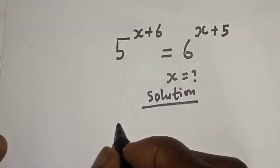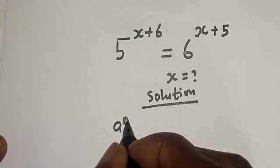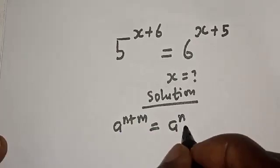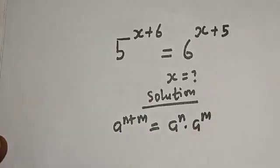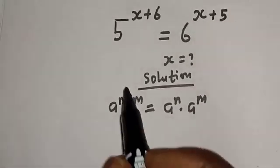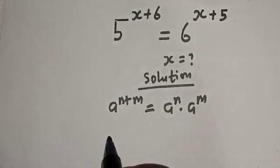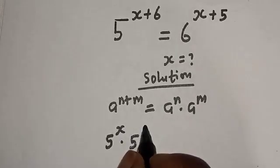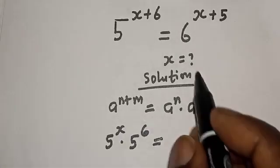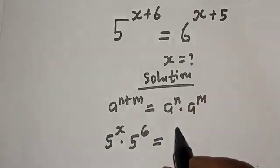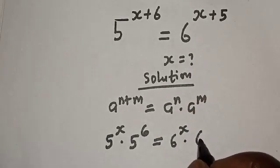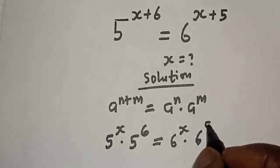Take note of this rule: if you have a raised to power n plus m, this is equal to a raised to power n multiplied by a raised to power m. So 5 raised to power s plus 6 can be written as 5 raised to power s multiplied by 5 raised to power 6, and 6 raised to power s plus 5 can be written as 6 raised to power s multiplied by 6 raised to power 5.